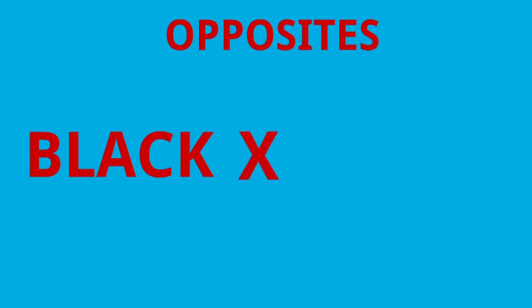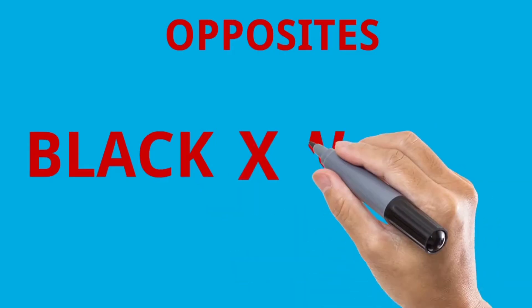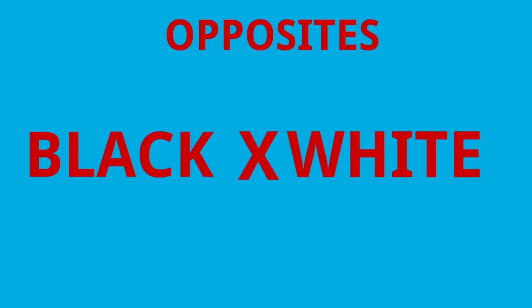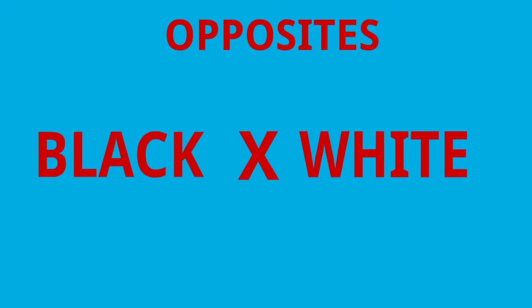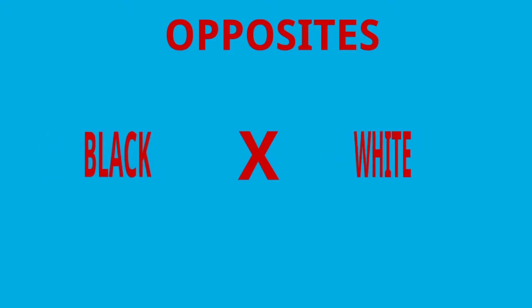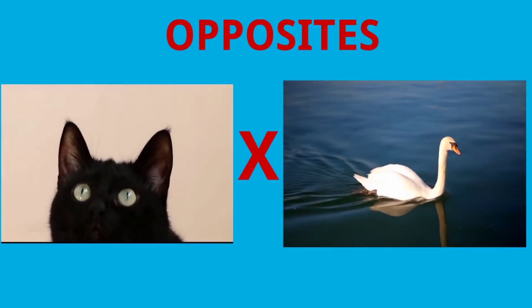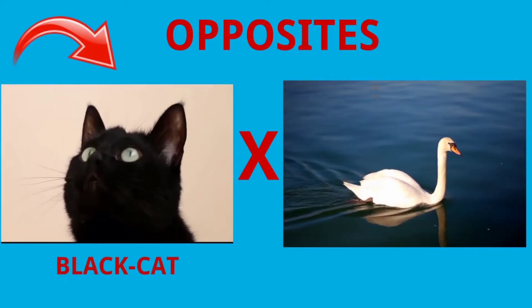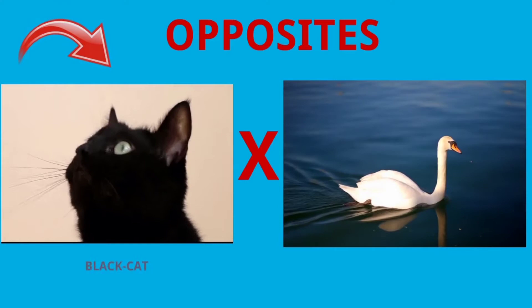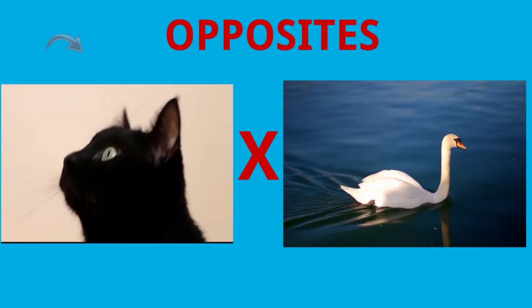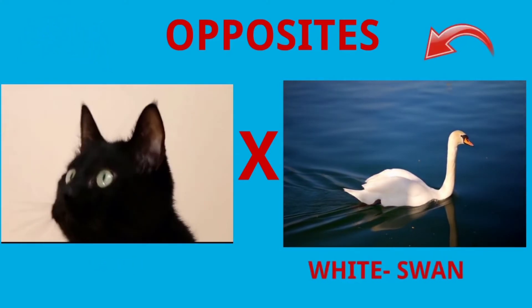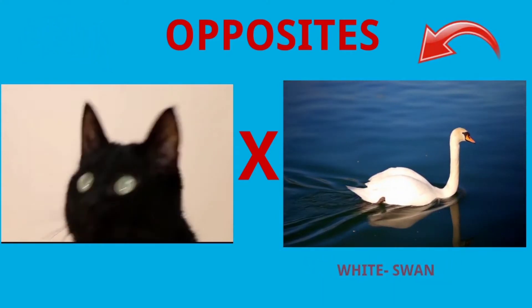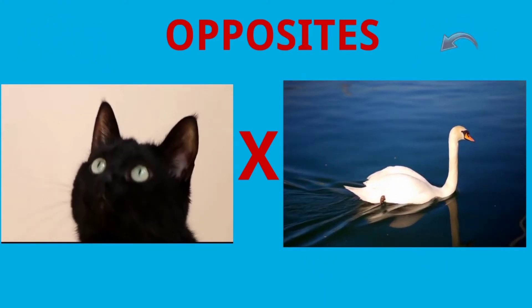Black. White. The cat is black in color. The swan is white in color.